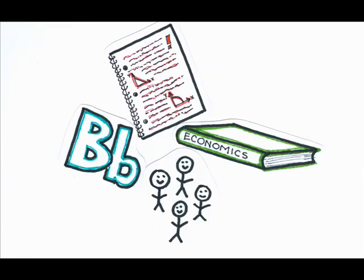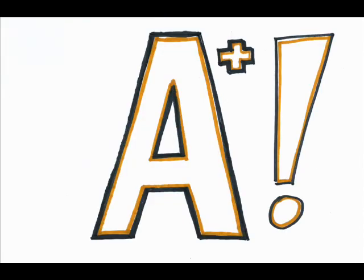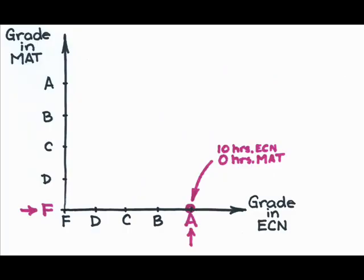If indeed you put in ten hours per week in economics, it's quite likely you'll get an A. But, this leaves you with zero hours to work on math. If you do no studying or homework for math, you're going to get an F. This is our first point on the graph.